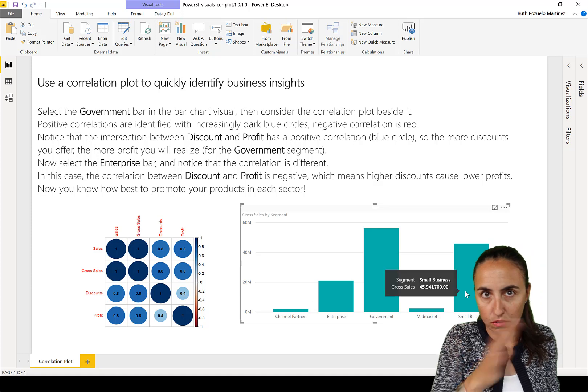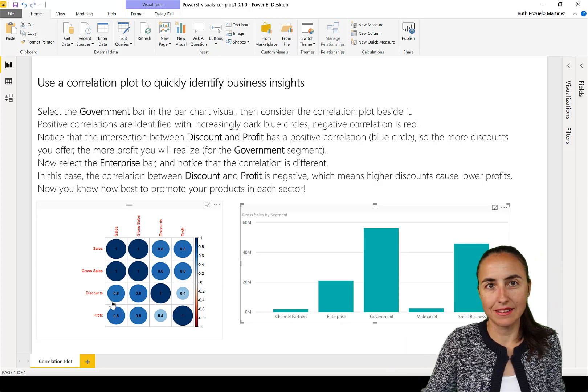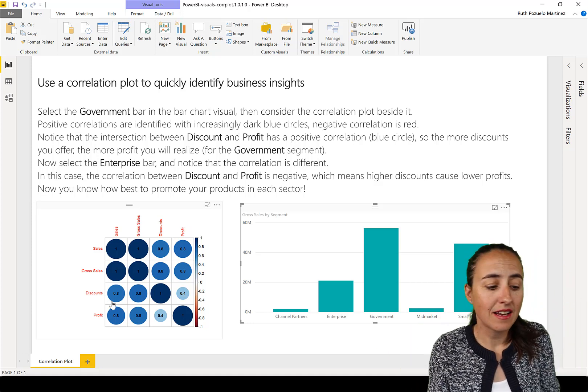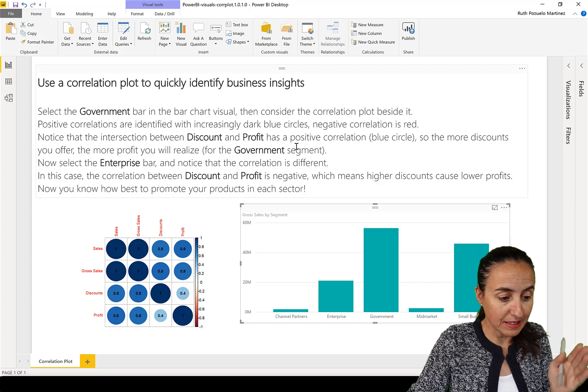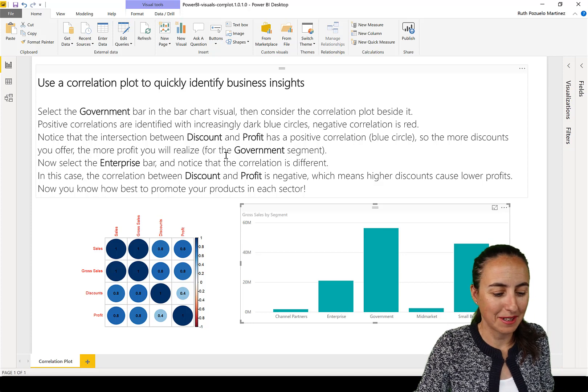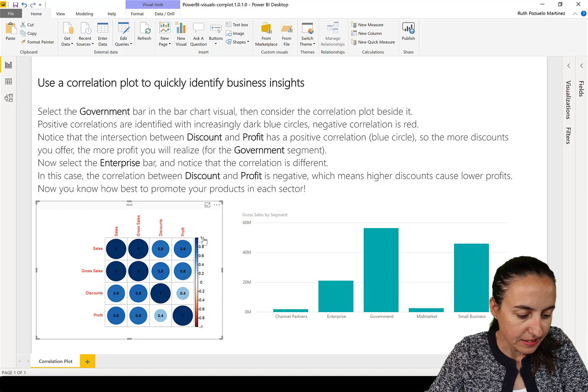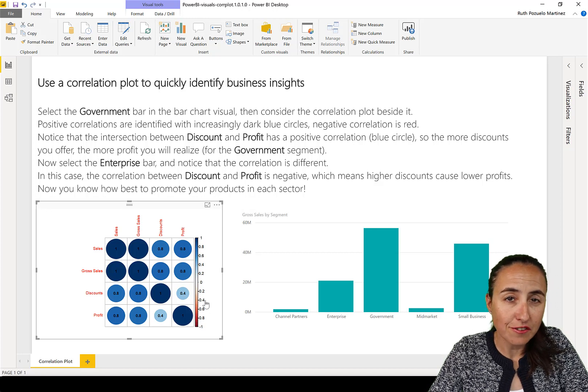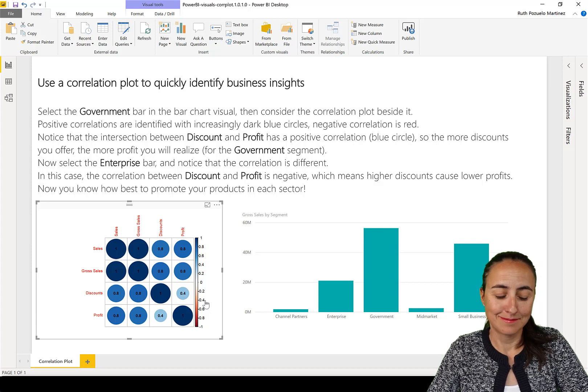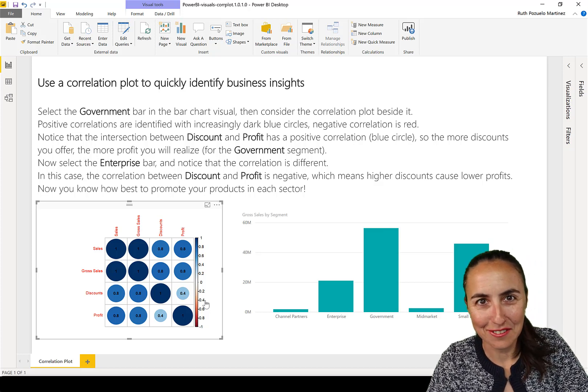And what they have here is segment, so the company type, and then they have sales, gross sales, discounts, and profit, and they've created a correlation plot. So they're trying to understand if, for example, the example that they have here, if giving discounts will affect profit. Now, first of all, what is this? Is this the coefficient of correlation or if it's of determination? I'm going to give you a second. Pause the video and then you come back and see if you figure it out.